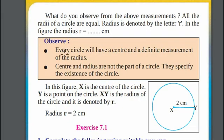Observe, every circle will have a center and a definite measurement of radius. This center and radius are not the part of a circle. They are just used to specify the parameters of the circle to measure and draw a circle.